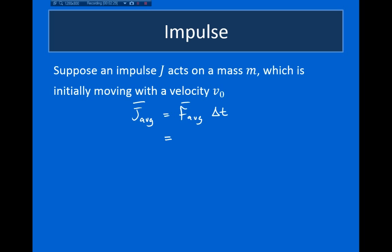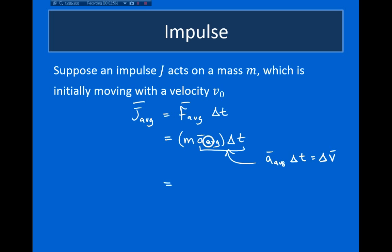If I use Newton's second law, the average force is equal to mass times average acceleration. And we know that the average acceleration times delta T is equal to the change in velocity. So if I plug in delta V for acceleration times delta T, I see that the average impulse is equal to mass times the change in velocity. This is the effect that an impulse has — the average impulse is going to be equal to mass times the change in velocity.